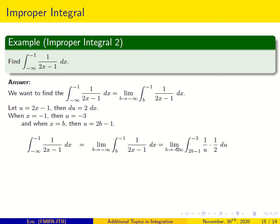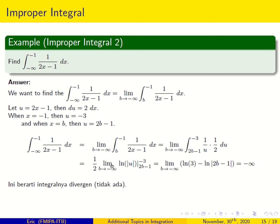After substitution, one-half factors out of the integral, giving the limit of one-half times the integral of 1 over u du, which equals ln of the absolute value of u, evaluated at 2b minus 1 and minus 3. This gives ln 3 minus ln of the absolute value of 2b minus 1. As b goes to minus infinity, the absolute value of 2b minus 1 goes to infinity, so ln of that goes to infinity.